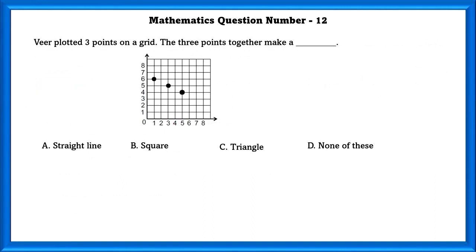Mathematics question number 12. We plotted three points on a grid. The three points together make a dash. The three points here make a straight line.